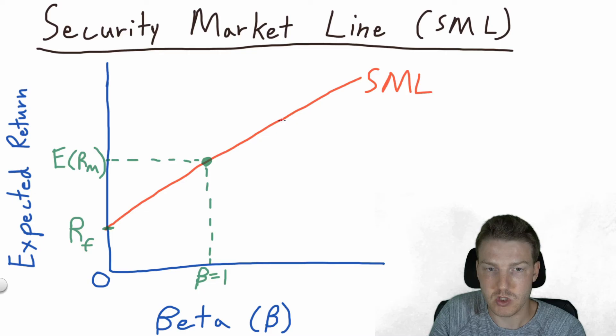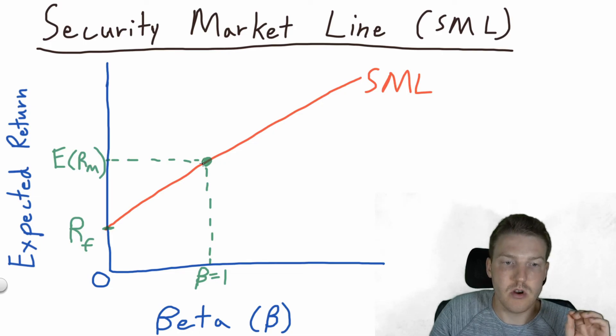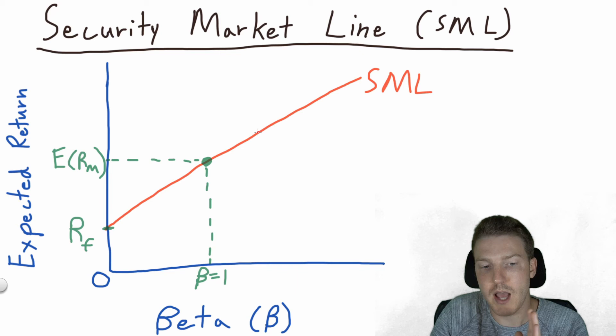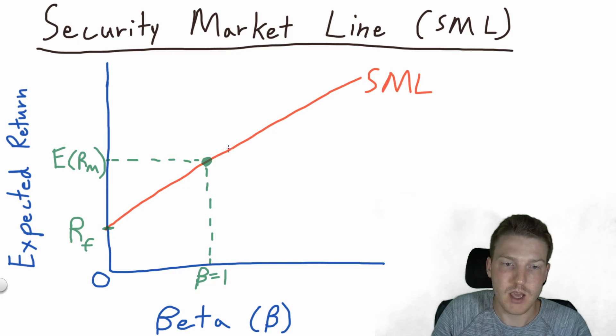For a given level of beta we should receive this much return. That's the orange line. And we see here in the green is the expected return of the market. Then that would have a beta of 1. So anywhere we go above or to the right of this green dot here, we're getting a higher beta than 1, but also expected higher returns than the returns on the market.